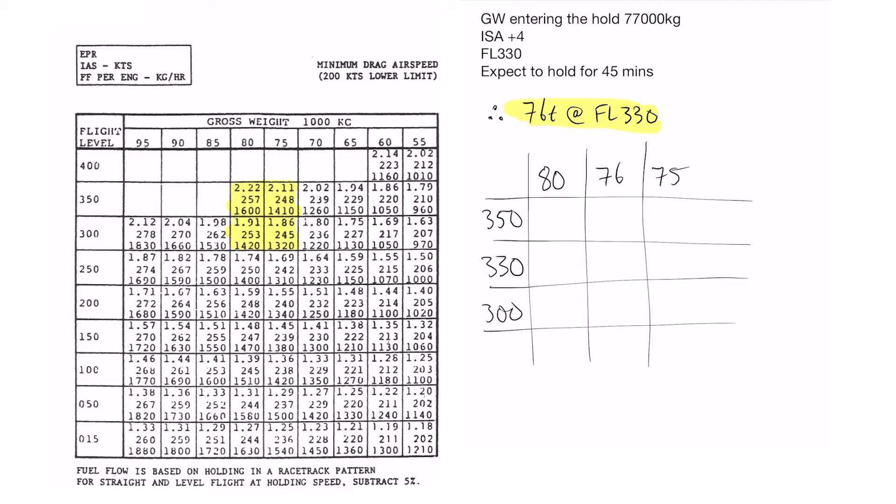We've already gone ahead and worked out the estimated mid-zone weight that came out to be 75.5 so 76 ton data. Using flight level 330 we've drawn up the table, highlighted the relevant boxes we're going to use. In this case we're just going to be looking at the speed instead of the fuel flow.